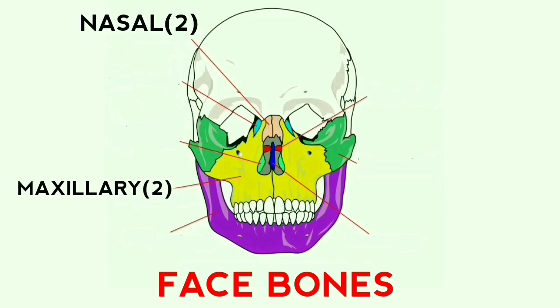In quantity there are two maxillary bones — one on the left side and the other on the right side. The next bone is the zygomatic bone. These are the cheek bones.